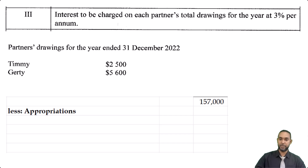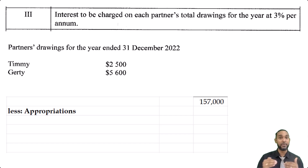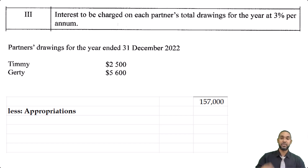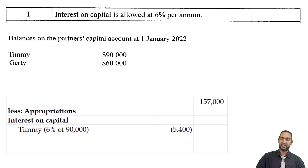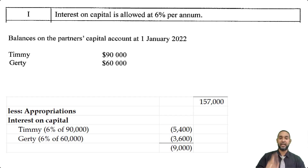Now we put 'less appropriations.' There's no specific order — you can put the salary first or interest on capital first — but the share of remaining profit must go last. I like to show interest on capital first. It says interest on capital is allowed at 6% per annum. Going down to the capital accounts: Timmy has $90,000, Goethe has $60,000. So 6% of $90,000 for Timmy gives $5,400, and 6% of $60,000 for Goethe gives $3,600, totaling $9,000.